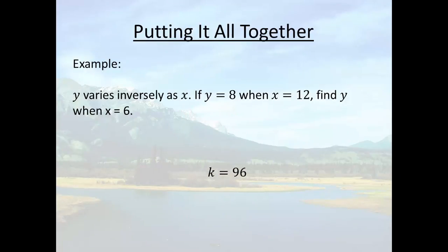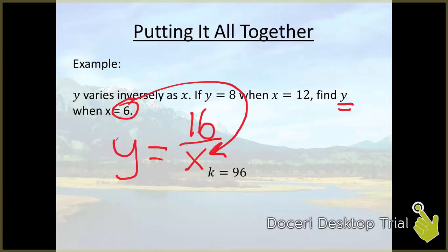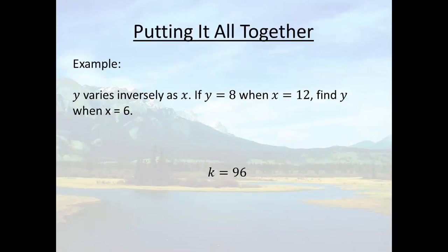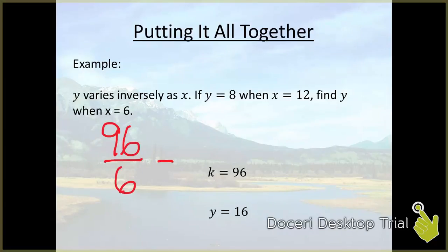Once we know that k is 96 we write the formula out, y equals 96 over x, and what we're looking for is what is y when x is 6. So we just take that 6 plug it in for x, solve for y. y equals 96 over 6, which means that y ends up being 16. 96 divided by 6 is 16.